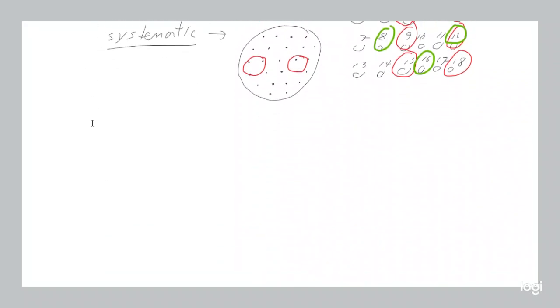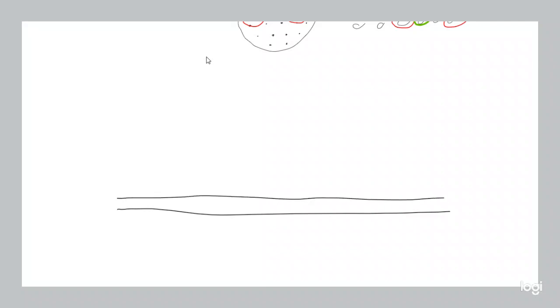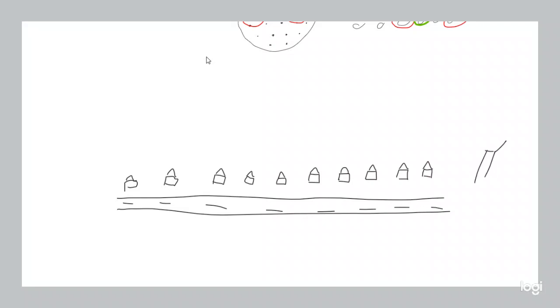Here's a simple example. Let's say there's a street with houses along it, and on one end of the street there is an airport. You want to study the noise level on this street. If you do random sampling and end up with more houses closer to the airport than farther away, you're going to get an average noise value that is higher than the actual average.